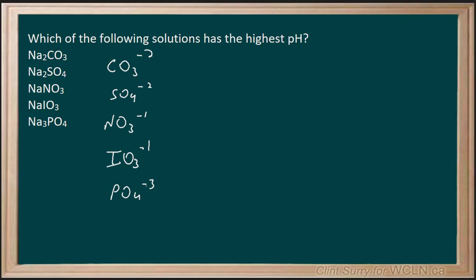Right off the bat I can eliminate some of these as not influencing the pH because they are conjugates of strong acids. So the nitrate ion, for example, we're going to eliminate from consideration right off the top. We would expect that one is not going to be shifting our pH.